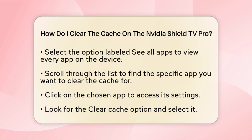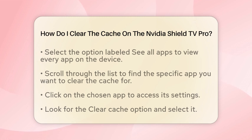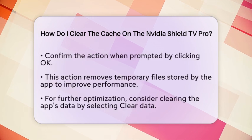Take a moment to scroll through the list and find the specific app you want to clear the cache for. This could be a streaming service like Netflix or a VPN app like IPVanish. Once you have located the app, click on it to open its settings.